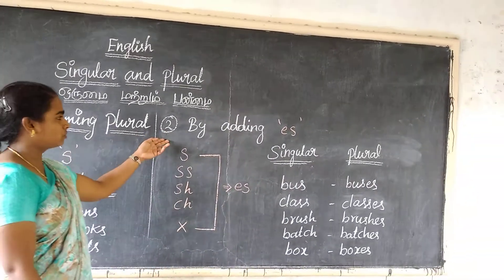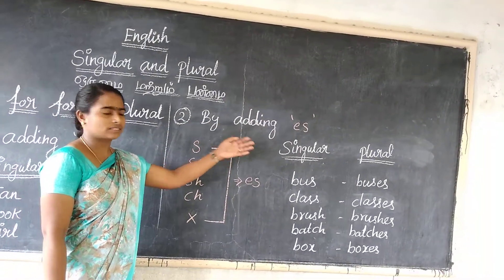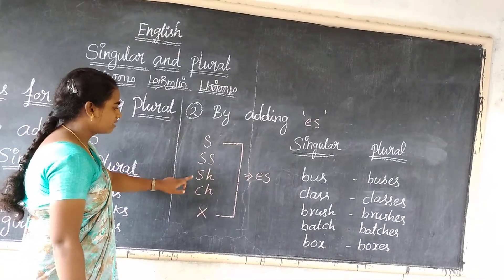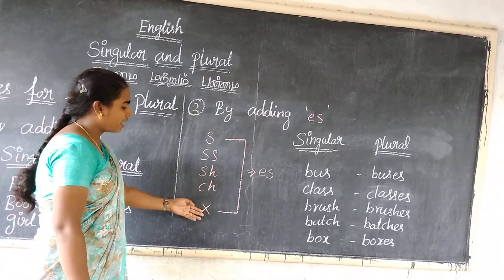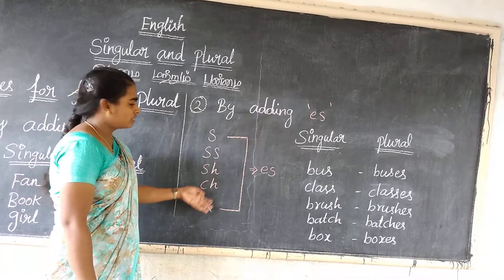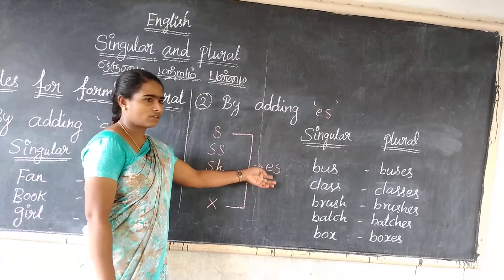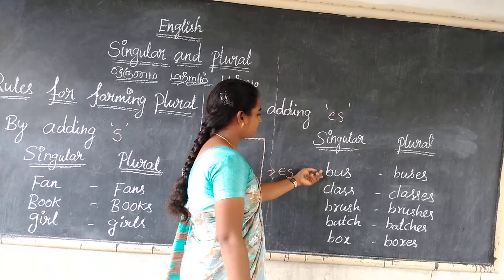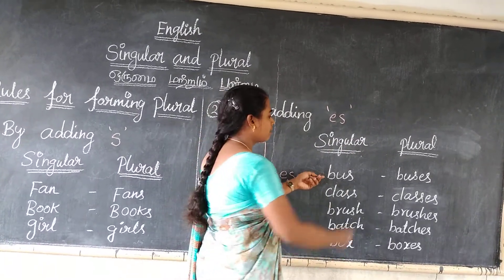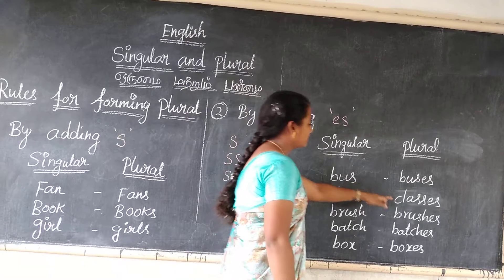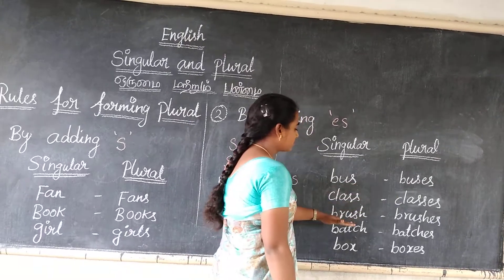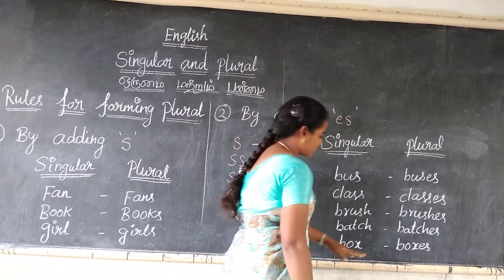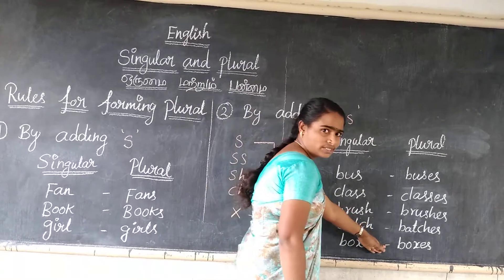Second rule: by adding 'es'. When words end with -s, -ss, -sh, -ch, or -x, you generally add 'es'. For example — singular to plural: bus becomes buses, class becomes classes, brush becomes brushes, batch becomes batches, box becomes boxes.